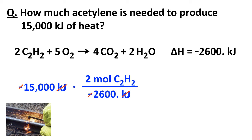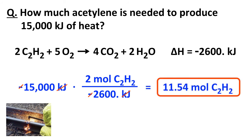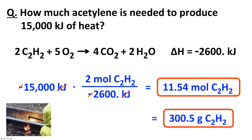Working this out: 15,000 times 2 divided by 2,600 gives 11.54 moles of C2H2, assuming 15,000 kilojoules to 4 significant figures. Moles is a reasonable answer for how much acetylene, but you might want it in grams. Using the molar mass, it's straightforward to convert moles of acetylene to grams, and that turns out to be 300.5 grams of acetylene.